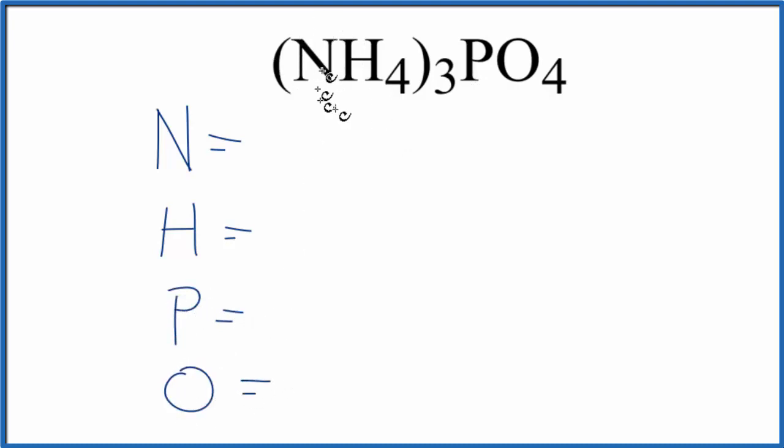When we look at the nitrogen, there's nothing written after it, but if that's the case, we can just assume there is a 1. So we have a subscript of 1, and everything in the parentheses here will be multiplied by the subscript outside. So 3 times 1, we have 3 nitrogen atoms.